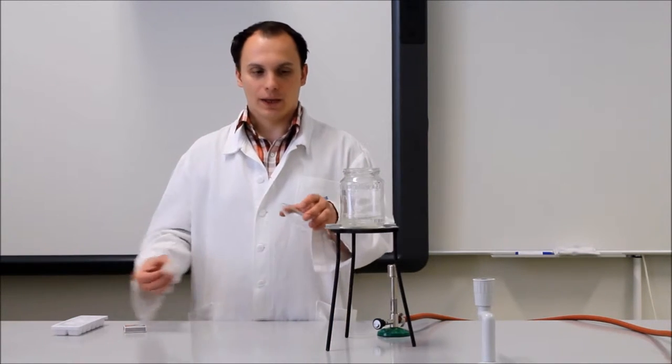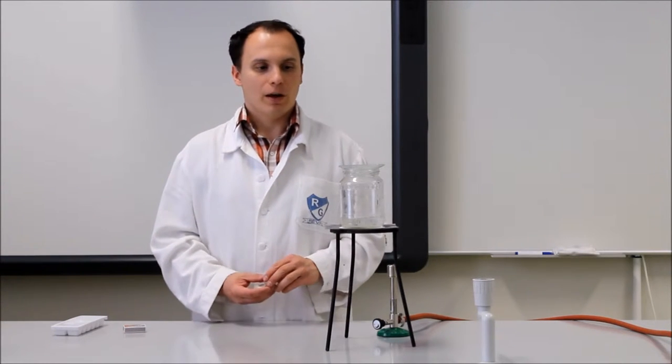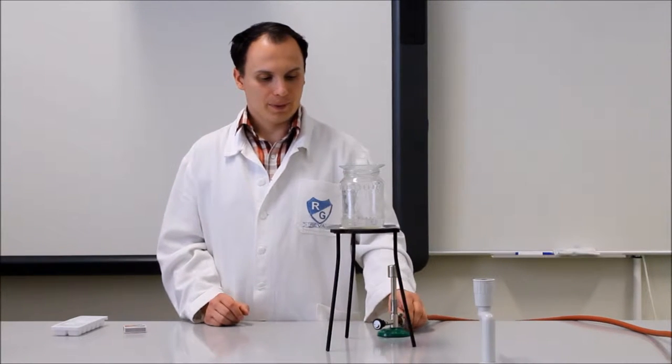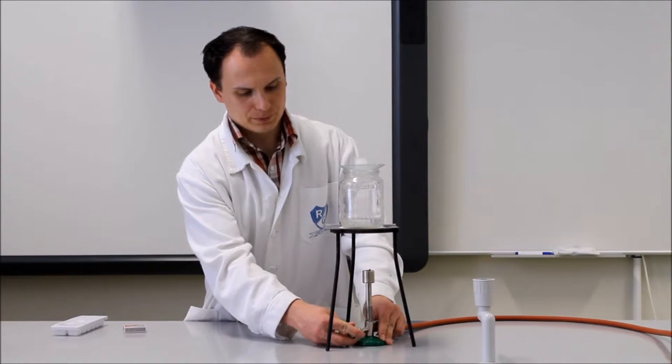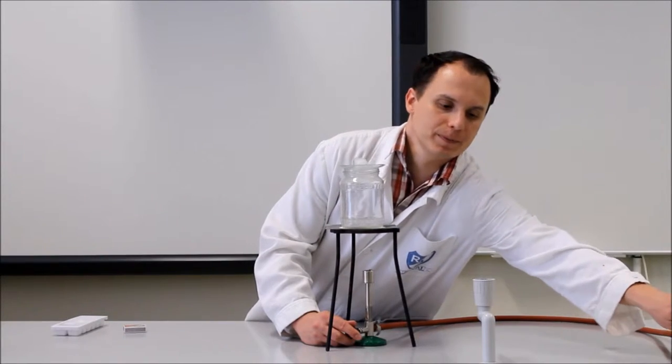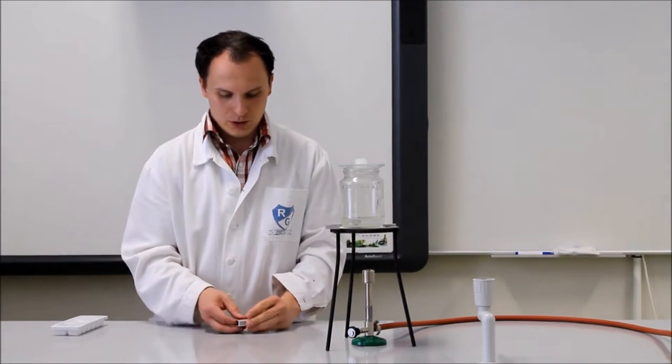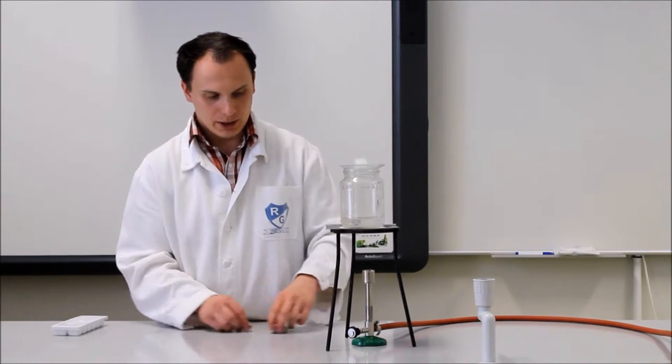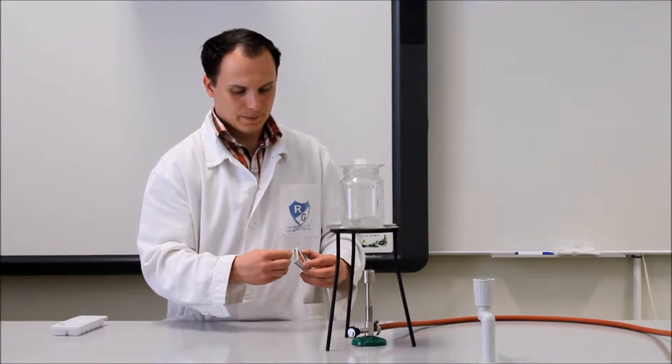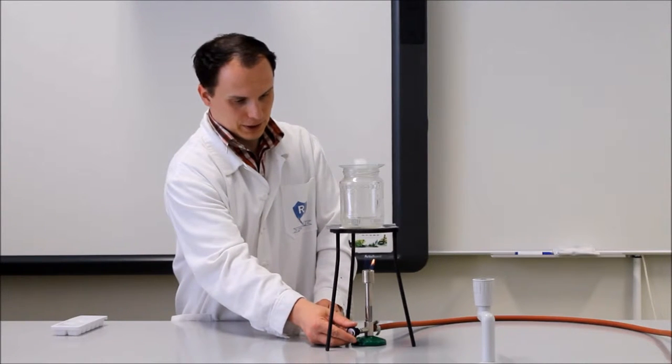Egy óraüveg, illetve jégkocka. Az óraüveget ráteszem a befőttős üveg tetejére, majd ennek a tetejére helyezem a jégkockát. A bunsenegőt megnyitva elkezdjük melegíteni a befőttős üvegben található vizet.